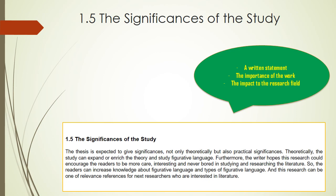It is important to convey to the reader why the research work was important. This may be an academic reviewer assessing your manuscript under peer review, an examiner reading your thesis, a funder reading your grant application, or another research group reading your published journal paper. Your academic writing should make clear to the reader the significance of the research you performed, the contribution you made, and the benefits of it.